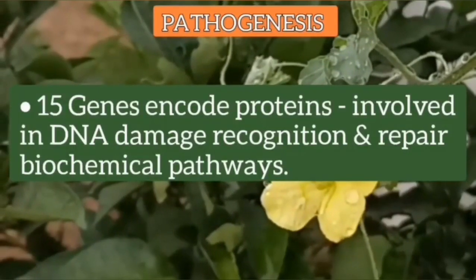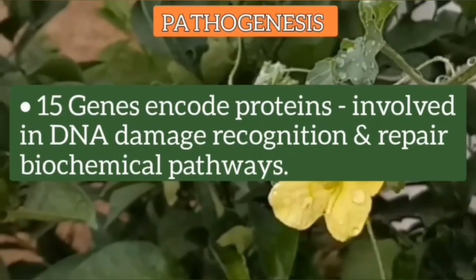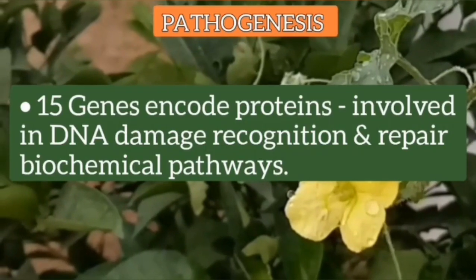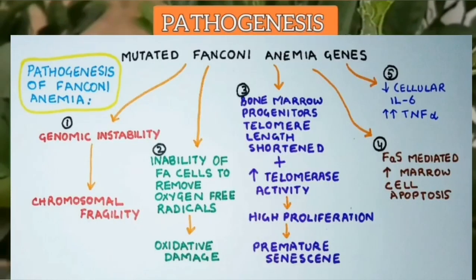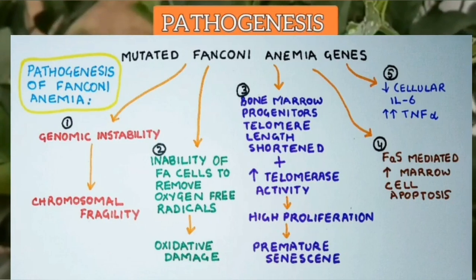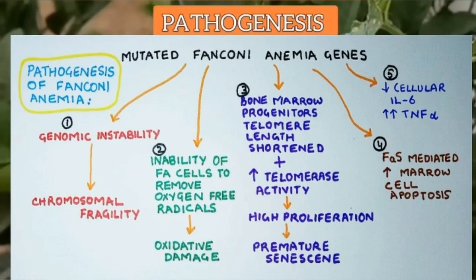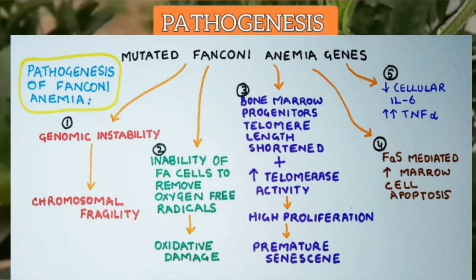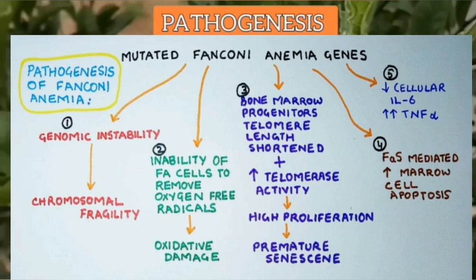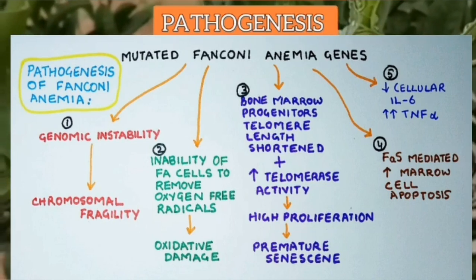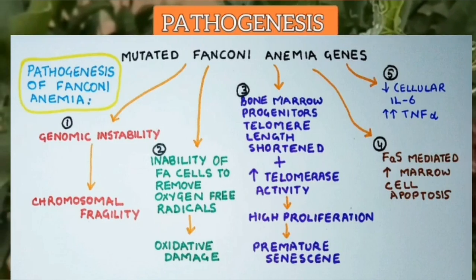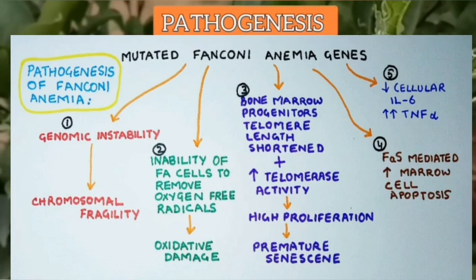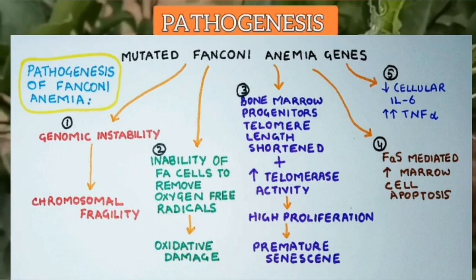Normally these genes encode proteins involved in DNA damage recognition and repair through biochemical pathways. Therefore, these mutated gene products lead to genomic instability and chromosomal fragility. An additional mechanism contributing to disease pathogenesis is the inability of Fanconi Anemia cells to remove oxygen free radicals, resulting in oxidative damage. Leukocyte telomere length is significantly shortened but telomerase activity is increased, suggesting a high proliferative rate of marrow progenitors, ultimately leading to their premature senescence.